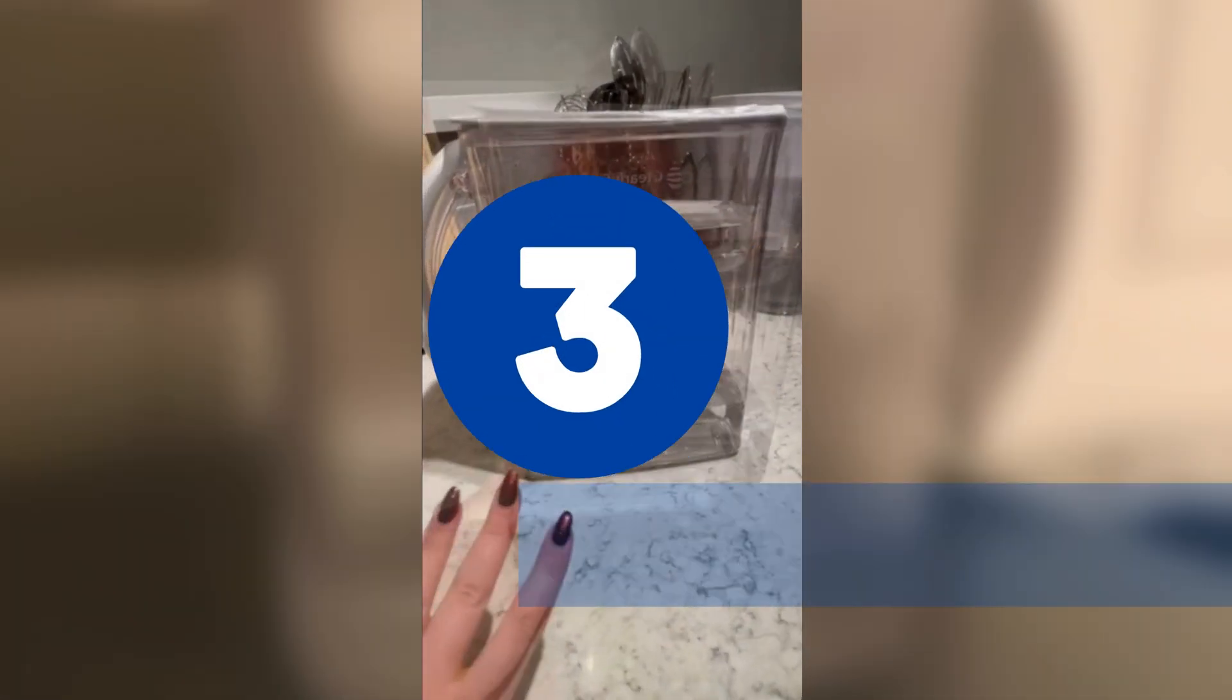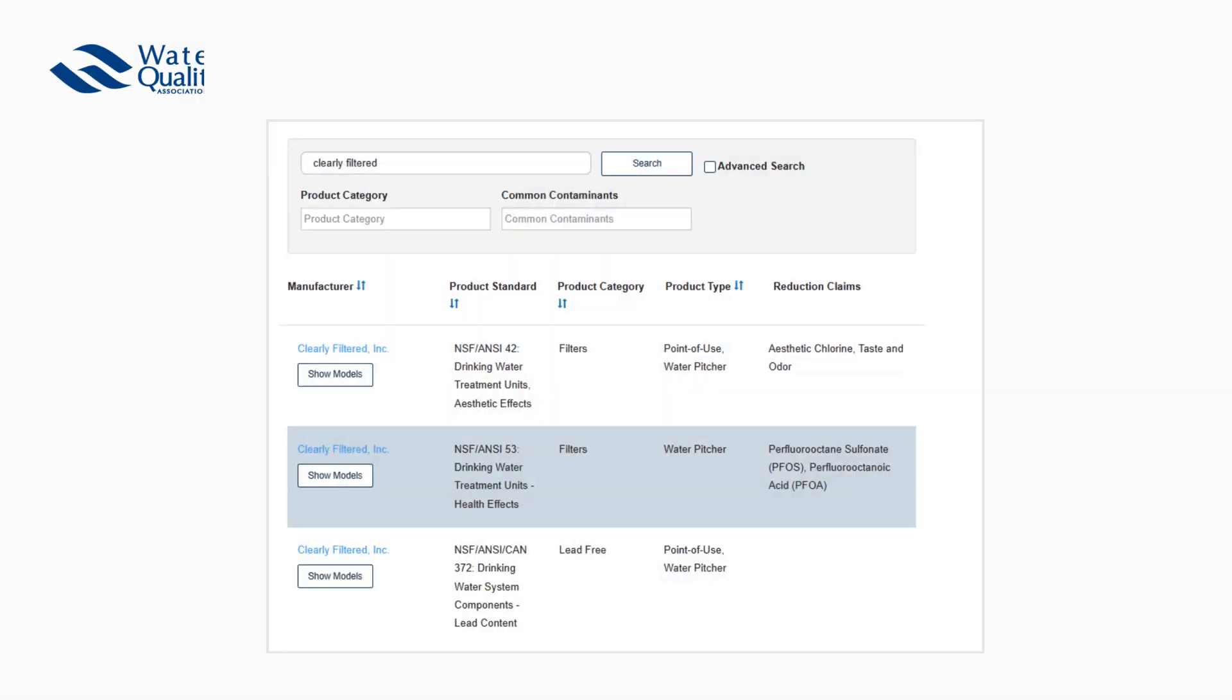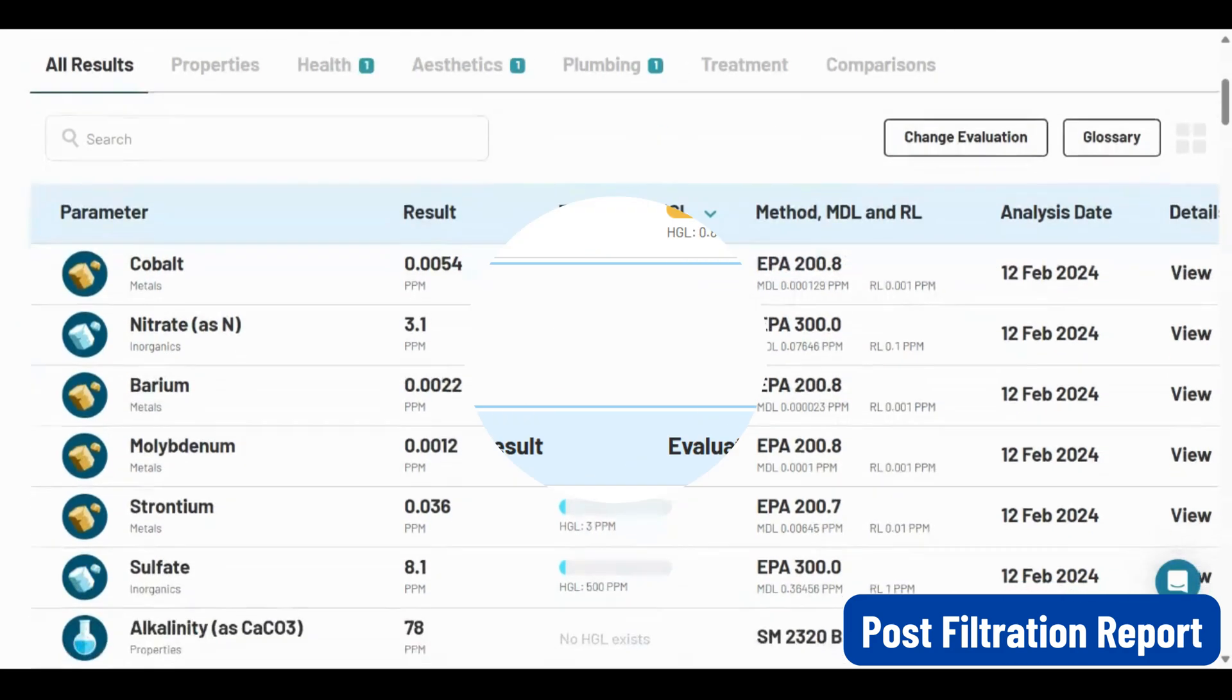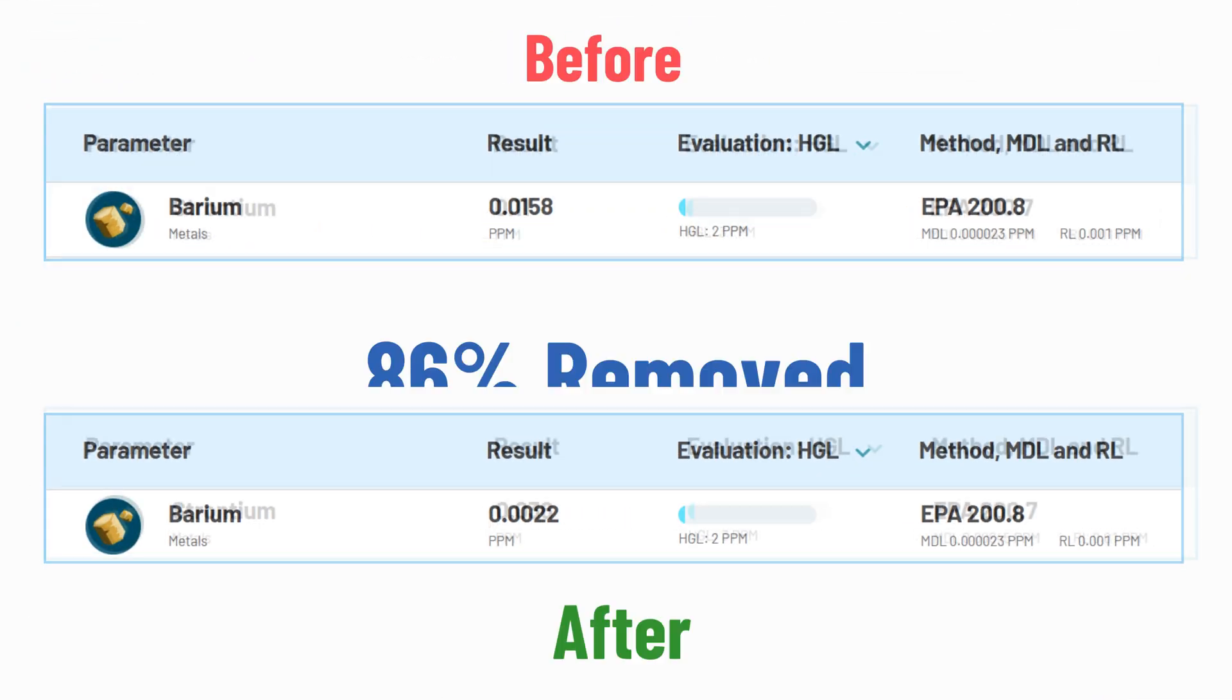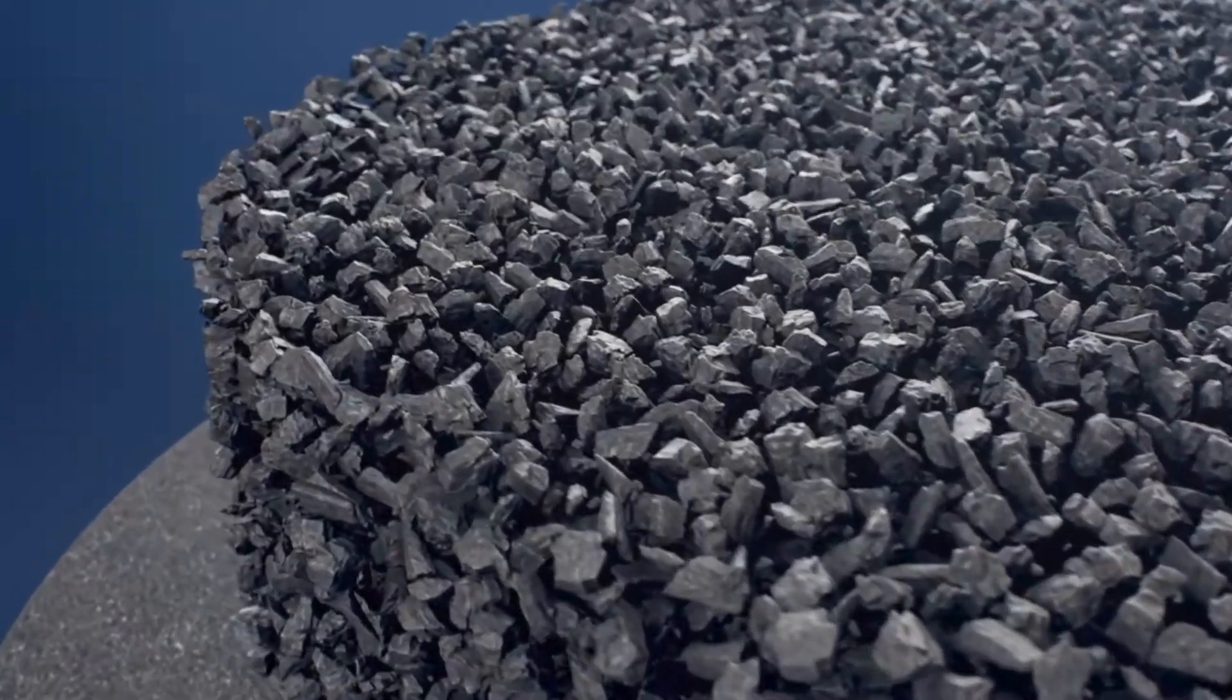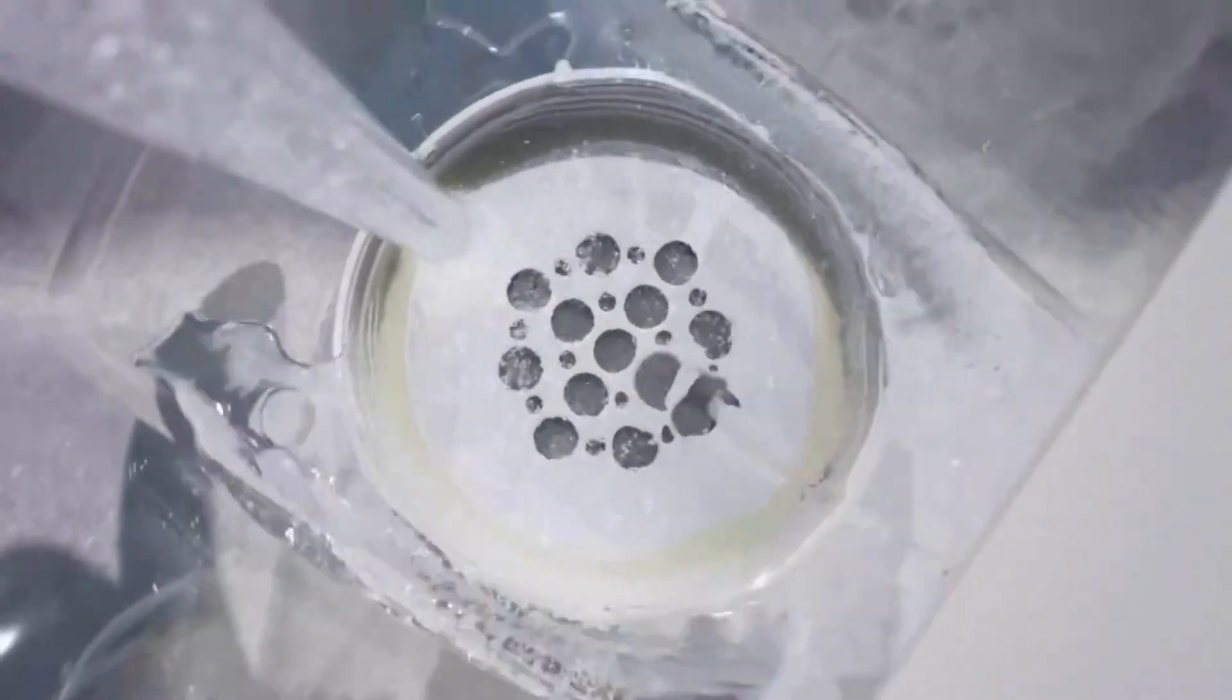Our final pick is Clearly Filtered Pitcher. This gravity-fed filter isn't certified to reduce fluoride like the first two, but independent tests confirm it removes 100% of fluoride along with uranium, copper, barium, and strontium. The Clearly Filtered Pitcher uses coconut carbon block, and its filter media has twists and turns, allowing it to trap more impurities than an average filter would.